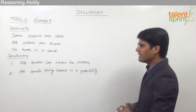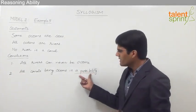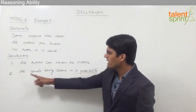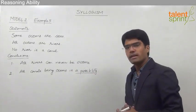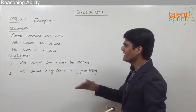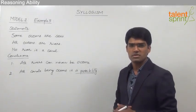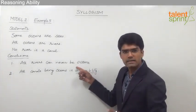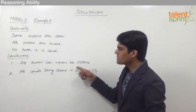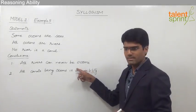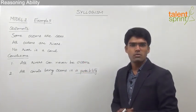Conclusion number two is a possibility, so we just need to check whether all canals can be oceans or not. Conclusion number one — all rivers can never be oceans — is a definite conclusion. For the first conclusion, we need to check all possible diagrams, and for the second one, if we can draw one diagram which proves this, we are through with this example.